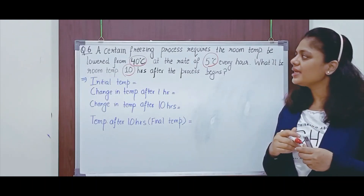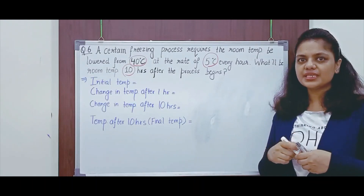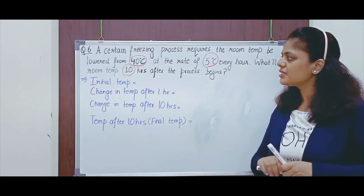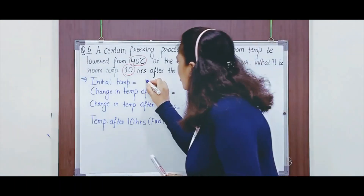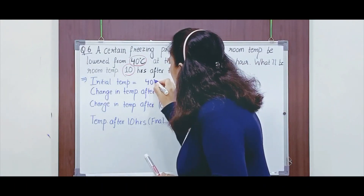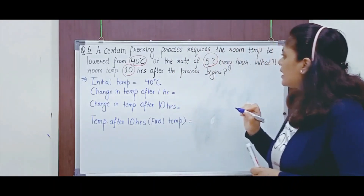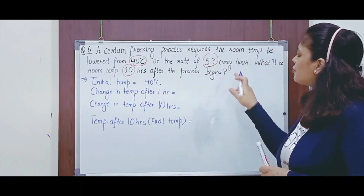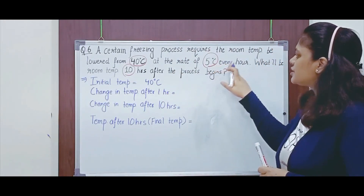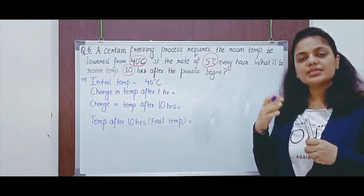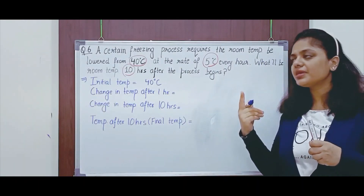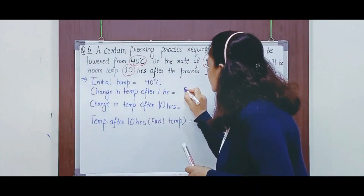What is the question saying? The initial temperature of the room is given as 40 degrees Celsius. Now, the rate of change of temperature is 5 degrees Celsius every hour. So, what is the change in temperature after every 1 hour? 5 degrees Celsius.